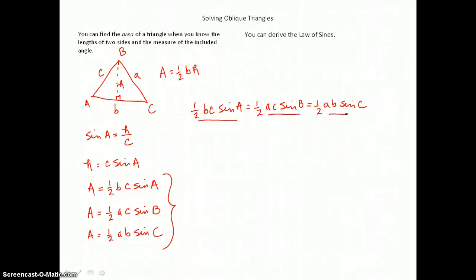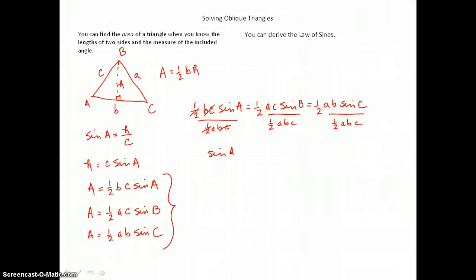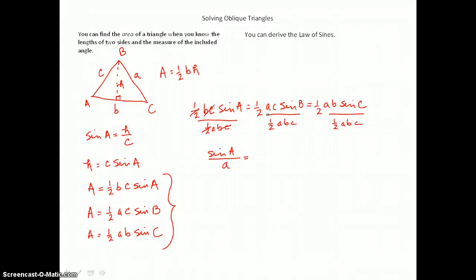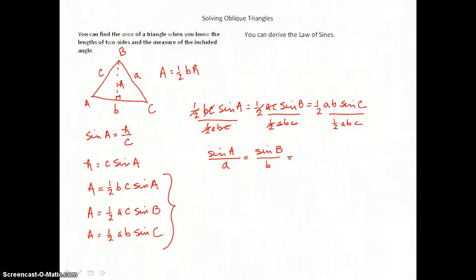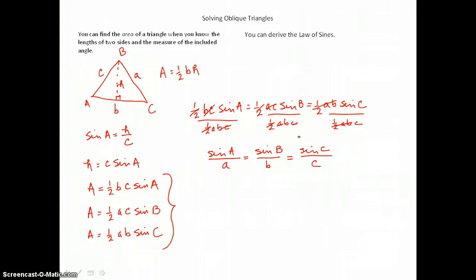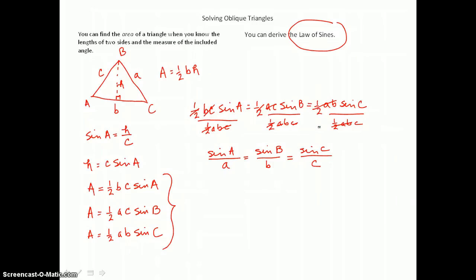To simplify this equation, we can divide all three area expressions by the product one-half ABC. In the first part, we cancel one-half and BC, leaving the sine of angle A over side A. In the middle part, we cancel one-half and AC, leaving the sine of angle B over side B. And in the third part, we cancel one-half and AB, leaving the sine of angle C over side C. This is our Law of Sines, and we can use it to solve oblique triangles.